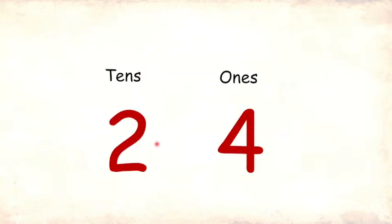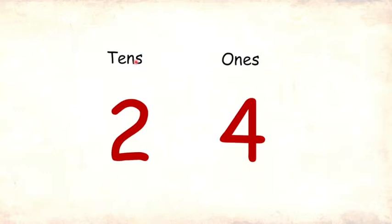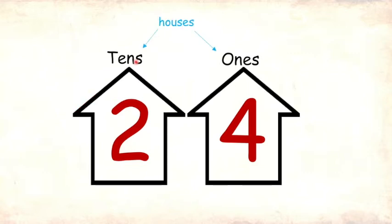In a number, the position or place of the digit is very important. So, every place is given a name. The last digit of every number is said to be in the 1s place and the one before it is in the 10s place. The 1s and 10s places can also be thought of as houses where the digits reside. And 1s and 10s can also be abbreviated to O and T.